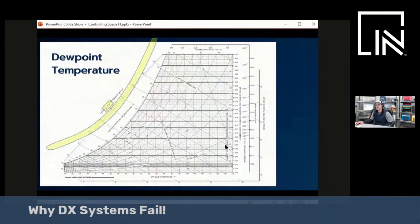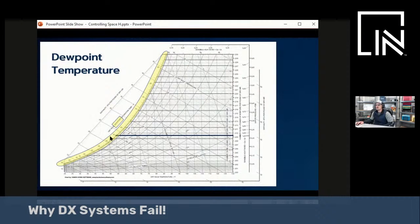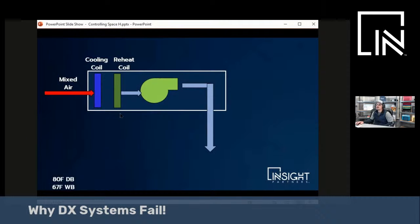If we go to our psychrometric chart, and I also have a couple videos on psychometrics, welcome to check those out. We draw a 55 degree dew point line. Let's say this represents our space. Anything in this area above that dew point will put the air conditioning system into what we call dehumidification mode.